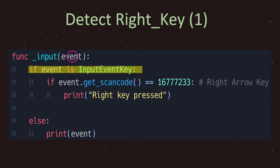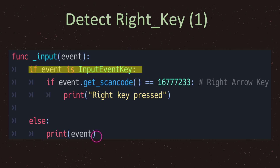We have the event parameter, which Godot passes as an InputEvent class. The InputEvent can be anything — a joystick, trackpad, button, mouse, MIDI, touch screen, etc. When we receive the event we need to filter it — we need to tell Godot that we don't care about other events. We need to say: if what we're receiving in the event is an InputEventKey class, then go ahead and run specific code. We do this with: if event is InputEventKey.